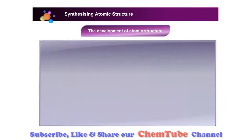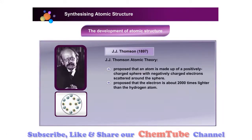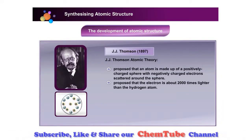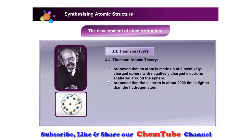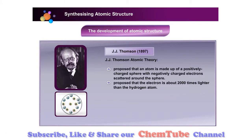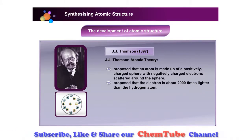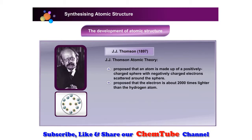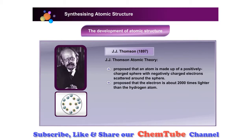J.J. Thomson's atomic theory proposed that an atom is made up of a positively charged sphere with negatively charged electrons scattered around the sphere. He also indicated that the electron is about 2,000 times lighter than the hydrogen atom.